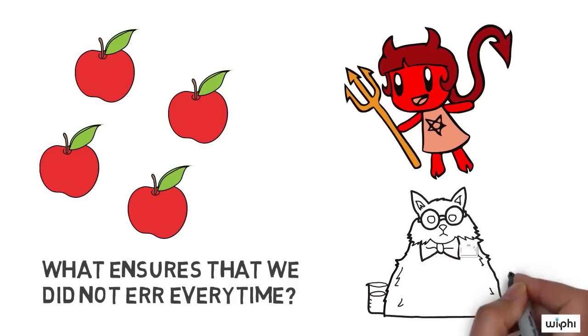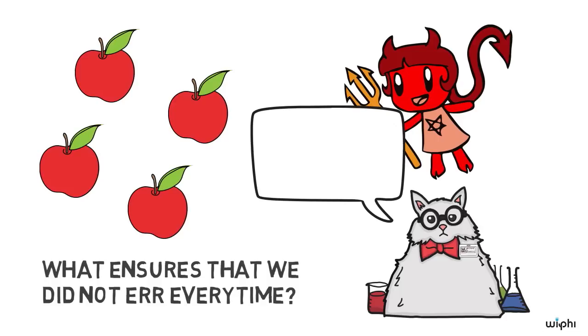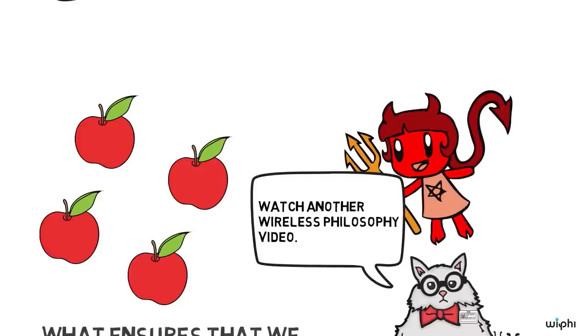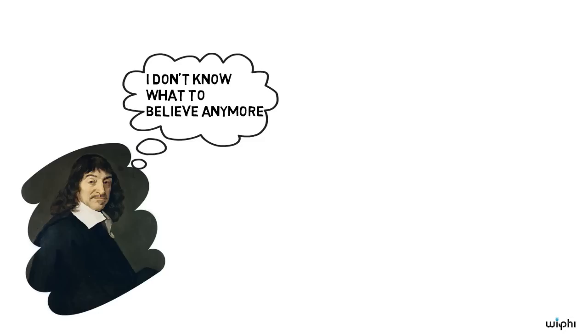Perhaps there is an evil demon or a wicked neuroscientist who constantly manipulates our thoughts by systematically distracting us when we try to verify our mathematical beliefs. As these considerations show, Descartes' method of radical doubt leaves hardly any belief unaffected.